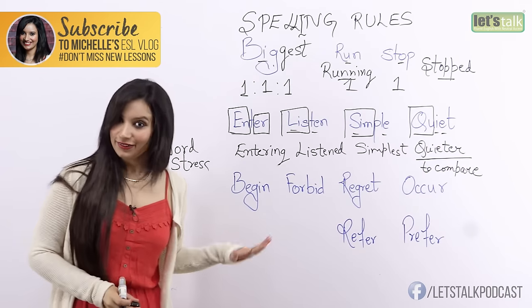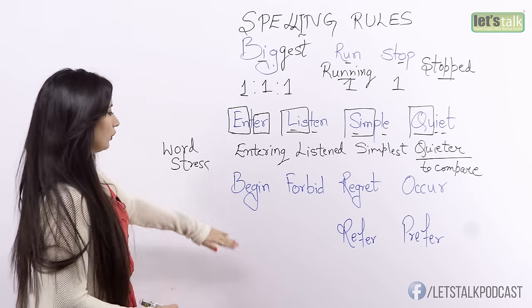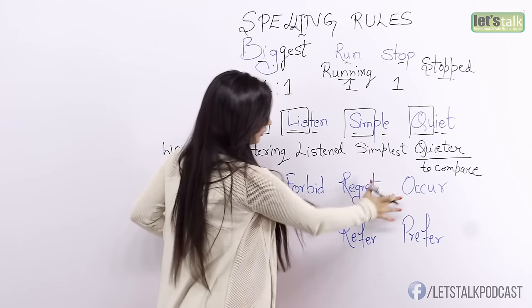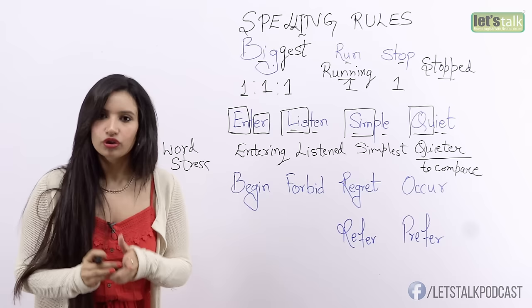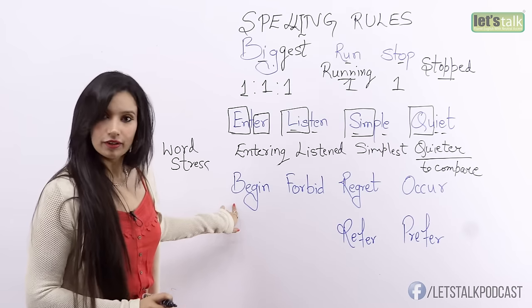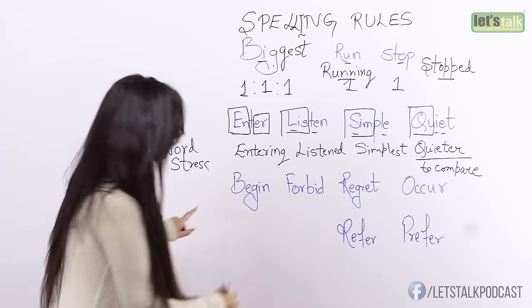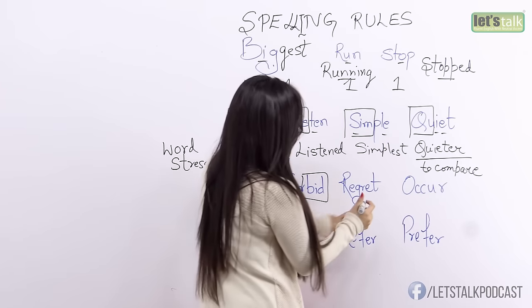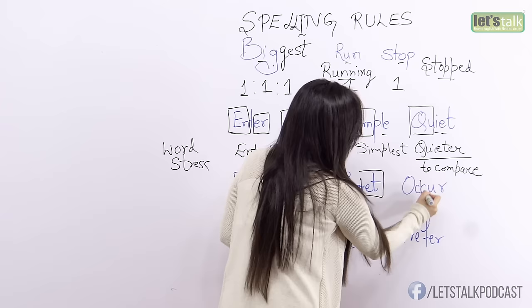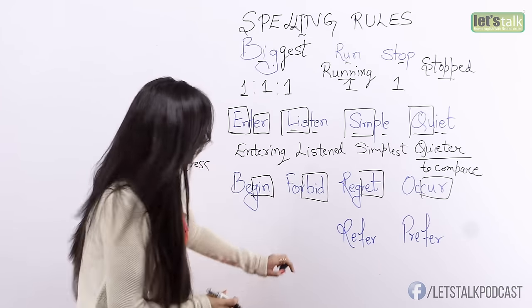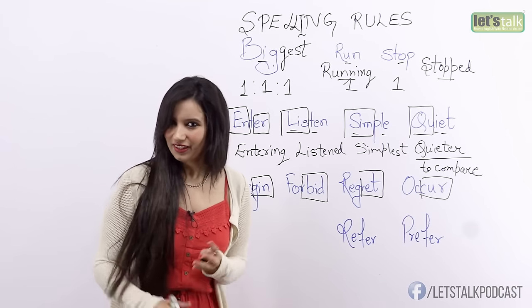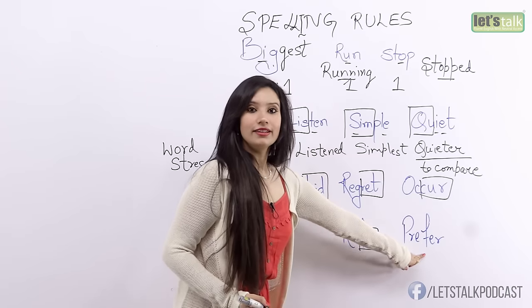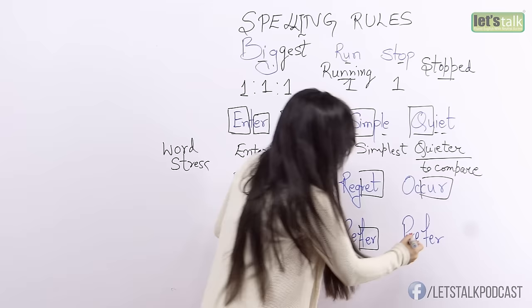Alright, with that we come to the next group of words on the board. So here, how many syllables do we have? Quickly count. 'Begin' — two syllables. So all these words are also two-syllable words, but we have to find out which syllable they are stressed on. Begin or begin? It's not 'begin,' it's 'begin.' So here the last syllable is stressed. 'Forbid' — the last syllable again. 'Regret.' 'Occur' — you don't say 'occur,' you say 'occur.' 'Refer' — not 'refer,' it's 'refer.' That's a common mistake you hear very often. The last syllable, the second syllable, is stressed. The same way as 'refer,' we say 'prefer,' and the last syllable is stressed.